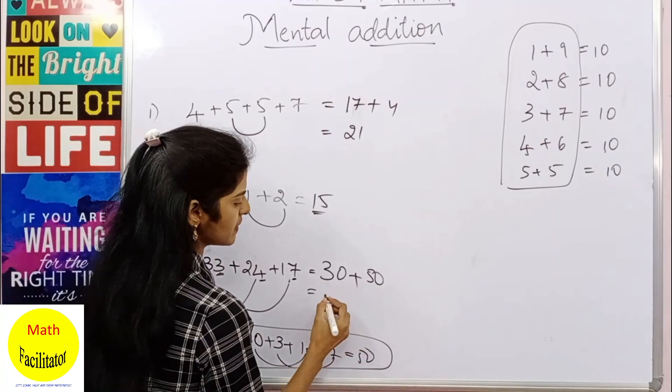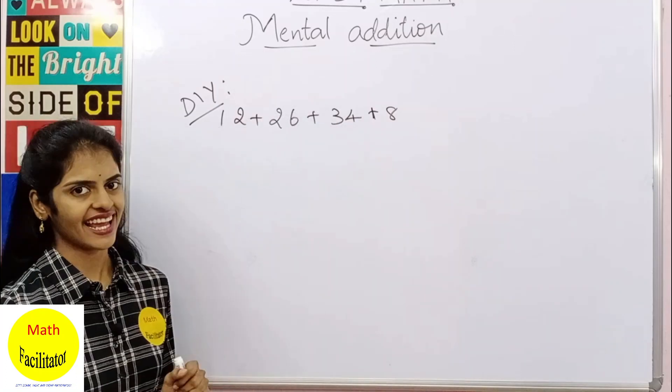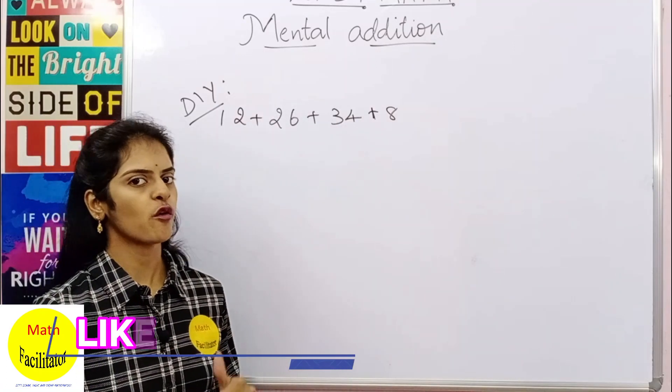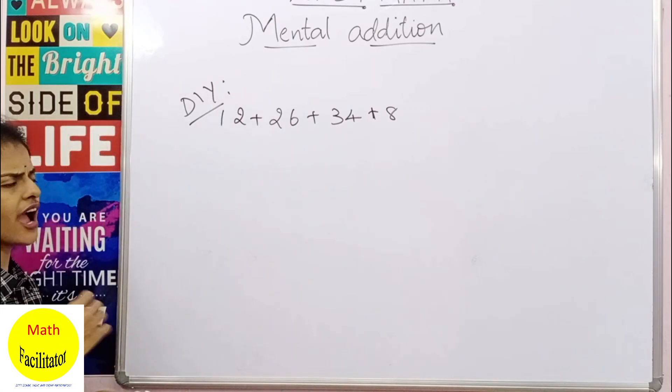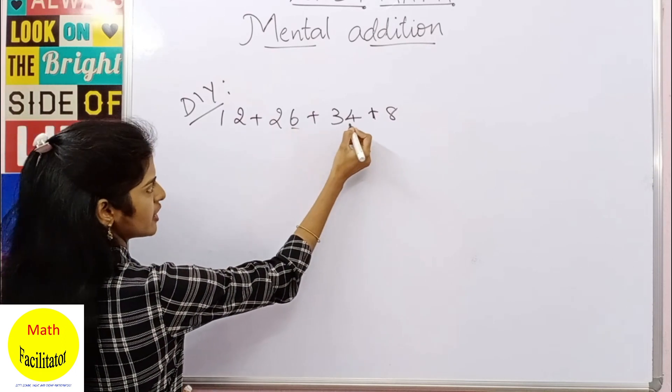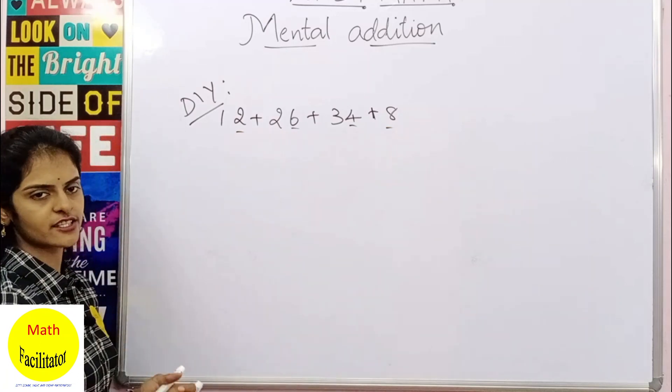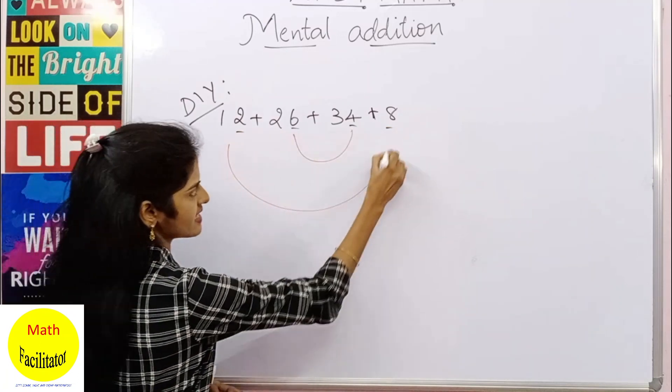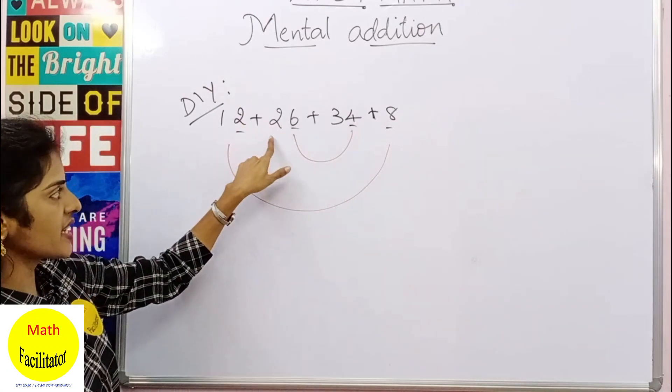Now try to do this orally. I'll give you two seconds. One and two. Your time's up. Did you finish? So how do you do it very quickly? Now just see here, you have 6 and 4 in the units place, and you have 2 and 8 in the units place. So this is the first combination and this is the second combination.